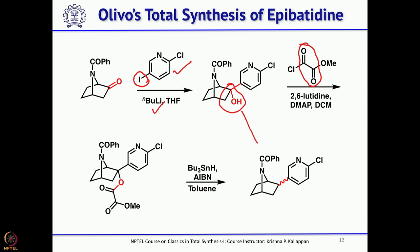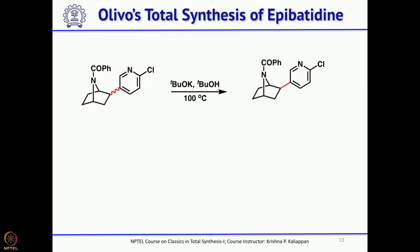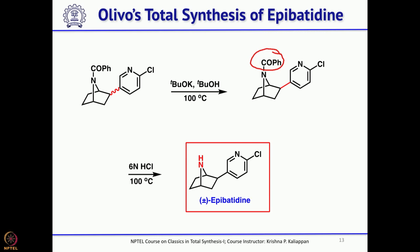Overall, the two-step deoxygenation process could be performed, but unfortunately it gave mainly the endo isomer. Since the natural product requires the exo isomer, the mixture was treated with potassium tert-butoxide and tert-butanol to give exclusively the exo isomer. Once the exo isomer was obtained, the benzyl protecting group — which is an amide — was cleaved by treatment with 6M HCl at 100 degrees, giving the natural product in racemic form.